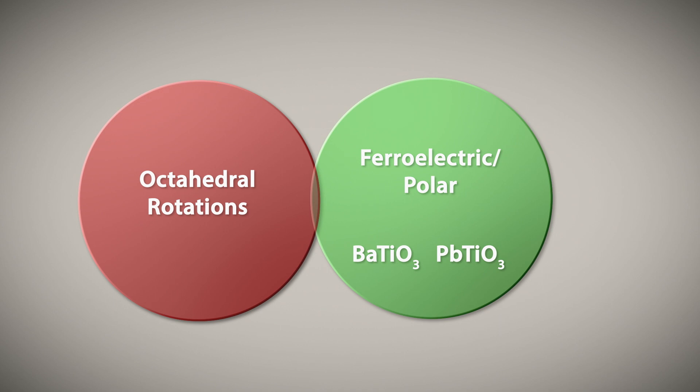And so we assume that octahedral rotations and ferroelectricity compete with and suppress each other in ABO3 perovskites. However, is this in fact the case?